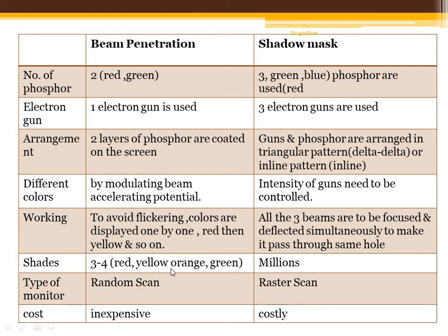In terms of shades: beam penetration provides a limited range — red, yellow, orange, and green only — while shadow mask can provide millions of shades of colors. Regarding cost: beam penetration is a very simple method and inexpensive, while the arrangement of shadow mask is very complicated and costlier. I hope you understood what beam penetration technology and shadow mask technology are, and also the differences between them.